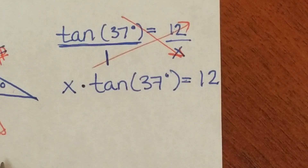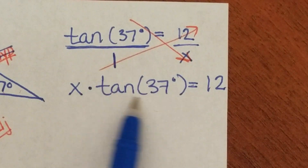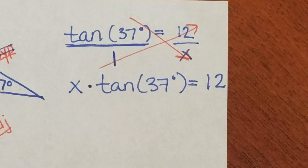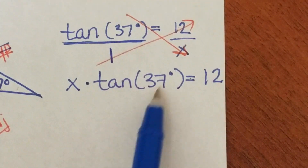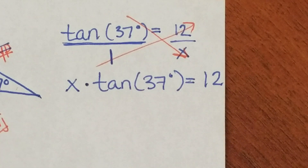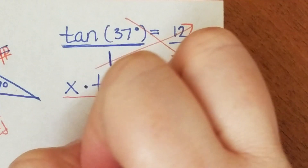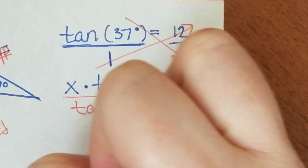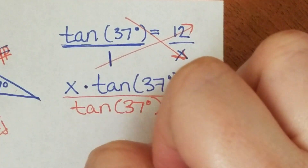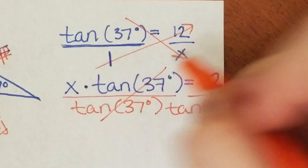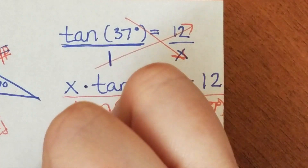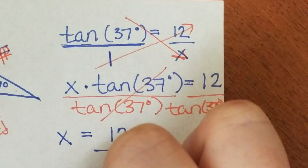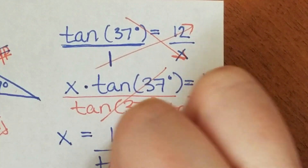The tangent of 37 degrees is just a number — it's a constant. It's like x times 12 or x times 3. The way that we undo multiplying is by dividing. So if I divide both sides by the tangent of 37 degrees, those reduce and I'm left with: x equals 12 divided by the tangent of 37 degrees. This would be my exact answer.